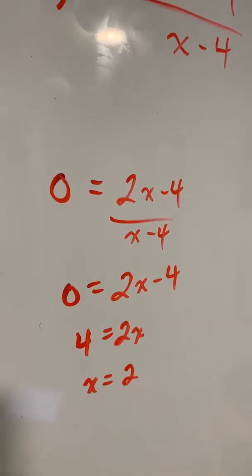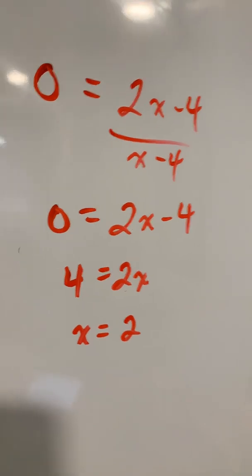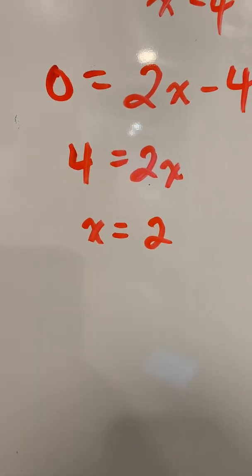Our denominator multiplies out and we're left with 2x minus 4 on the right-hand side, applying a little bit of algebra results in x equals 2 as the x-intercept.